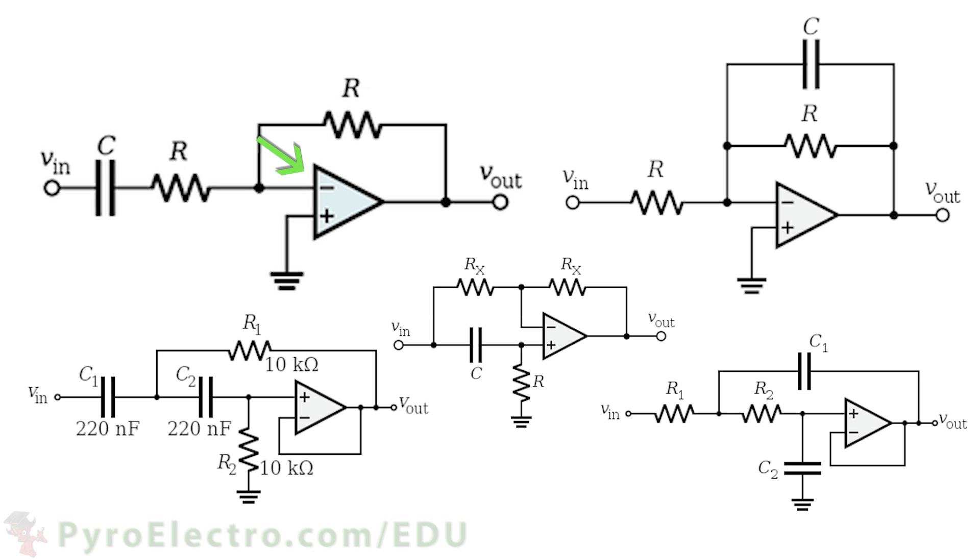In addition, active filters can also be designed to be more precise in what frequencies they are filtering. A very common part that is used when building active filter circuits is the op-amp, and you can see many different examples of its usage as a filter on your screen.